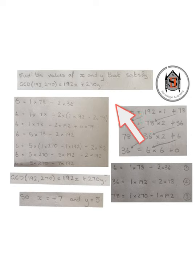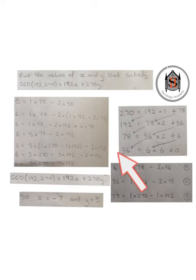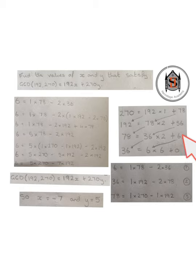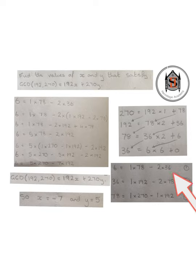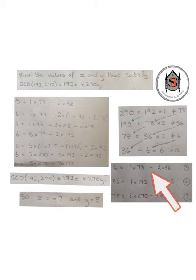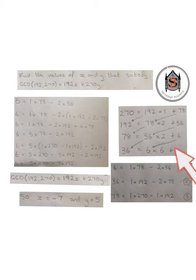To start off we use our working from Part A. We express the remainder of each row in its own separate equation. We always start with the second-last row and rearrange it to get the remainder of 6 on its own. So we have 6 equals 1 lot of 78 minus 2 lots of 36. If we take that term across to the left-hand side, that's what we get.